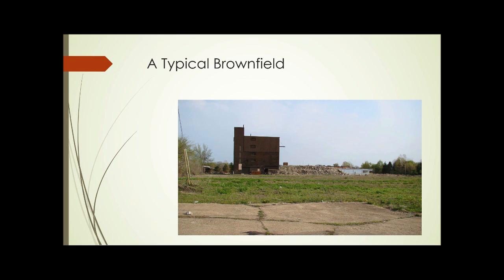A typical brownfield photograph shows an industrial building with a large vacant area of land surrounding it. It's quite likely that this land was used for parking trucks or equipment and has been subjected to leaking fuel or oil, or may have been used as storage for toxic chemicals — something we need to check for and test for.